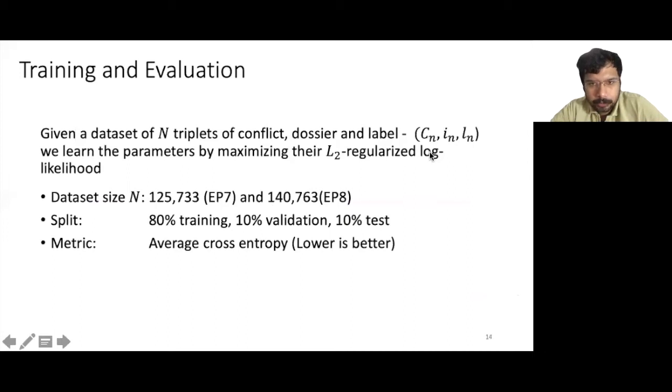We also consider all different combinations of these three models, which we can construct by keeping the appropriate terms in the exponentials. We now describe the training and evaluation procedure. Our dataset consists of data points that are the form of these triplets consisting of the conflict, the dossier, and the label.